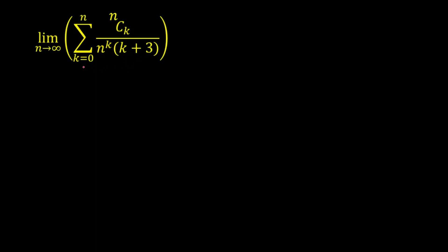The first thing I observe is that to evaluate the limit, I'll need the value of the sum — that is, summation k from 0 to n of nCk divided by n raised to power k, multiplied by k plus 3. If I write out terms for k=0, 1, 2, up to n, I'll get n+1 terms. Rather than evaluating directly, I'll try to convert this expression into a perfect expansion, since nCk and n^k are present — that's the hint.